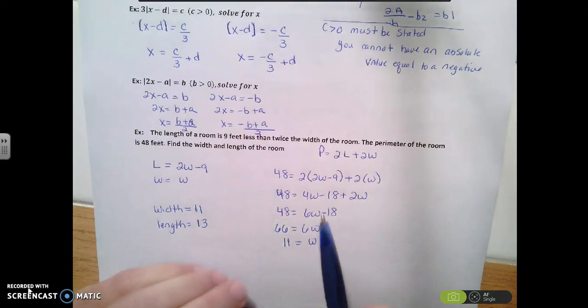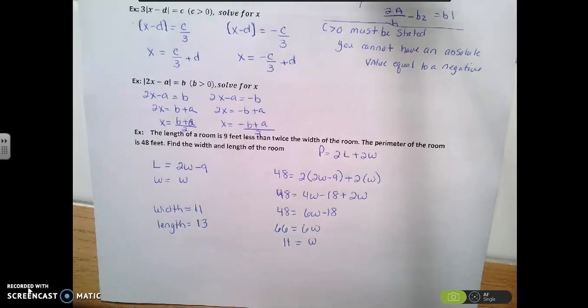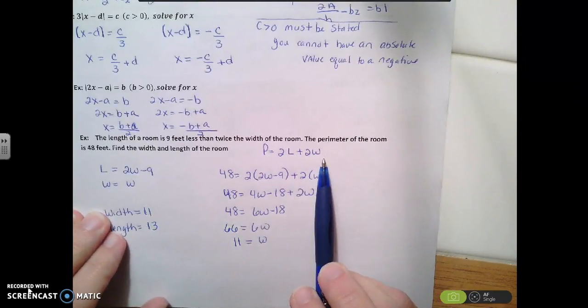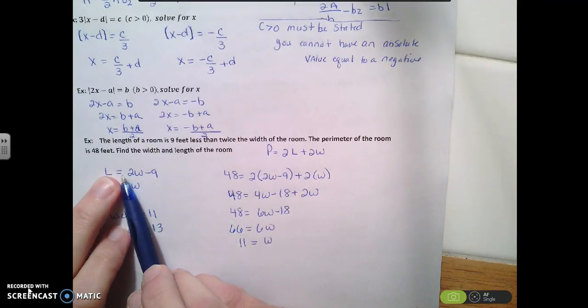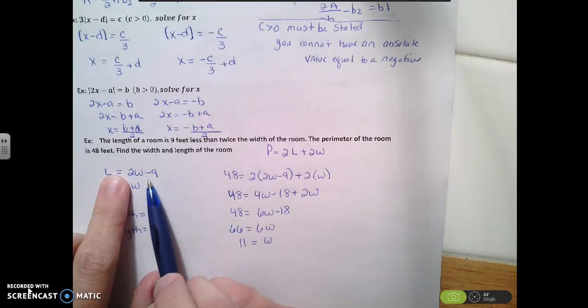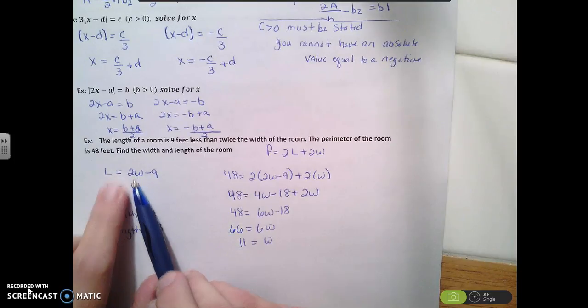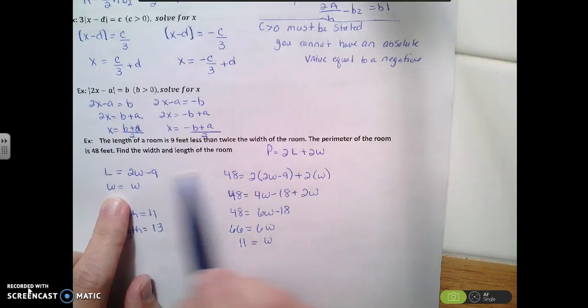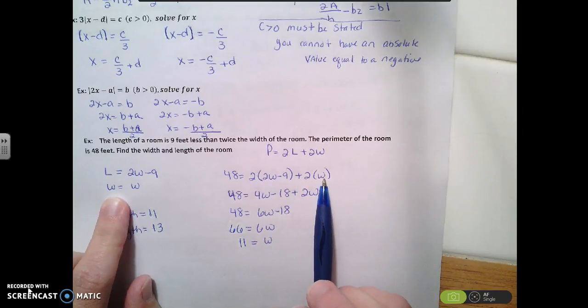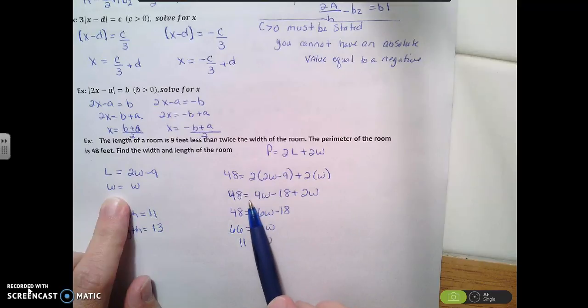Alright, so the next one, we have a word problem. So the length of a room is 9 feet less than twice the width of the room. The perimeter of the room is 48 feet. Find the length and the width of the room. So the formula for perimeter is 2l plus 2w. So we're reading what it says. The length of the room is, means, equals 9 feet less than, which means minus 9, twice the width, which is 2w. And then our width is just w. So if I replace those into this equation, I get 2 times the length plus 2 times the width, and the perimeter of the room is 48.